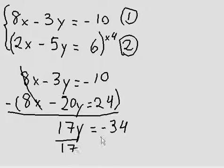Now I can divide both sides by 17, and y is negative 2. I'm running out of room here.